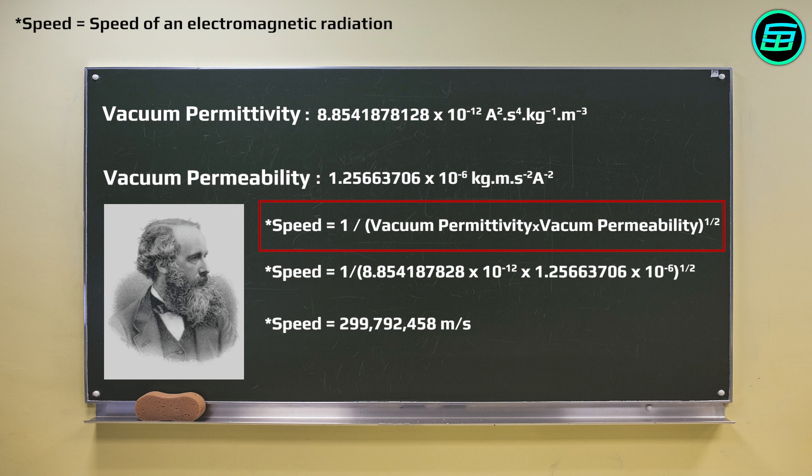So as you can see, the speed of light depends on vacuum permittivity and vacuum permeability.